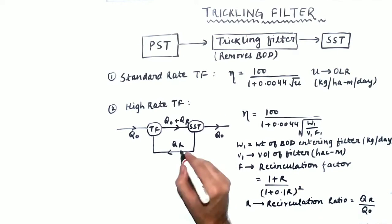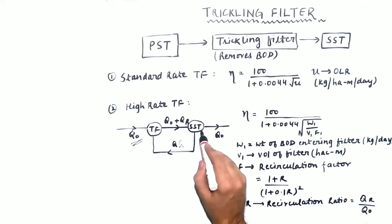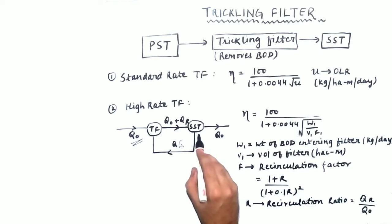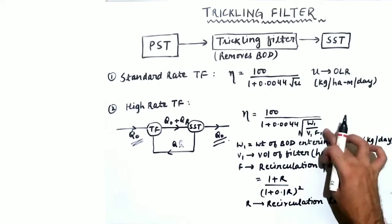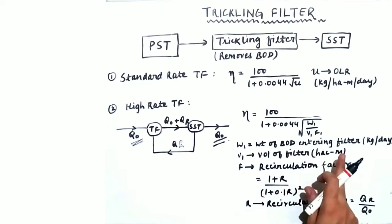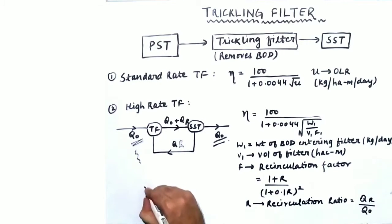In the high rate trickling filter, the recirculation flow QR comes from the secondary sedimentation tank back to the trickling filter. So the trickling filter receives Q0 plus QR, and the secondary sedimentation tank releases the original Q0 discharge. The efficiency is calculated by the formula E = 100 / (1 + 0.0044 × √(W1 / V1F1)), where W1 is the weight of BOD entering the filter in kilogram per day, V1 is the volume, and F1 is the recirculation factor.